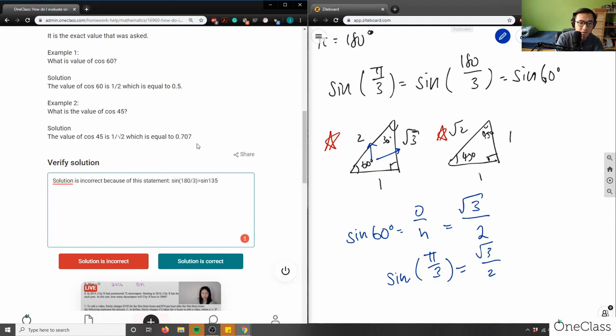And then we say here, so sine 180 divided by 3 equals sine 60, not sine 135. Therefore, the correct solution is, sine pi over 3 equals root 3, so square root of 3 over 2. So therefore, that's the correct solution. So again, this solution here is incorrect.